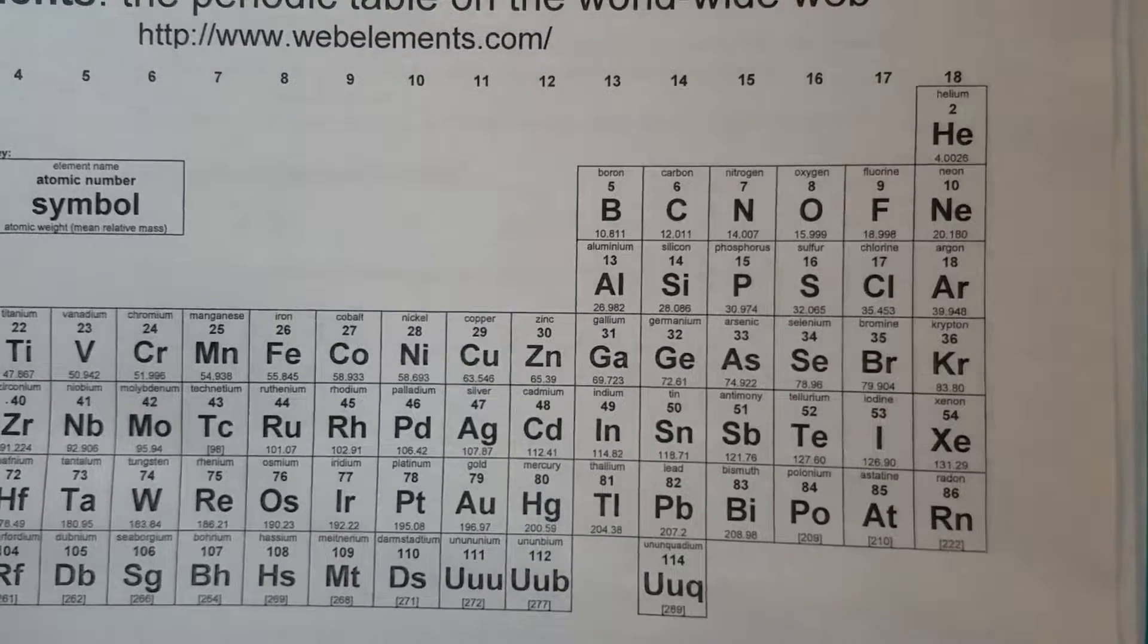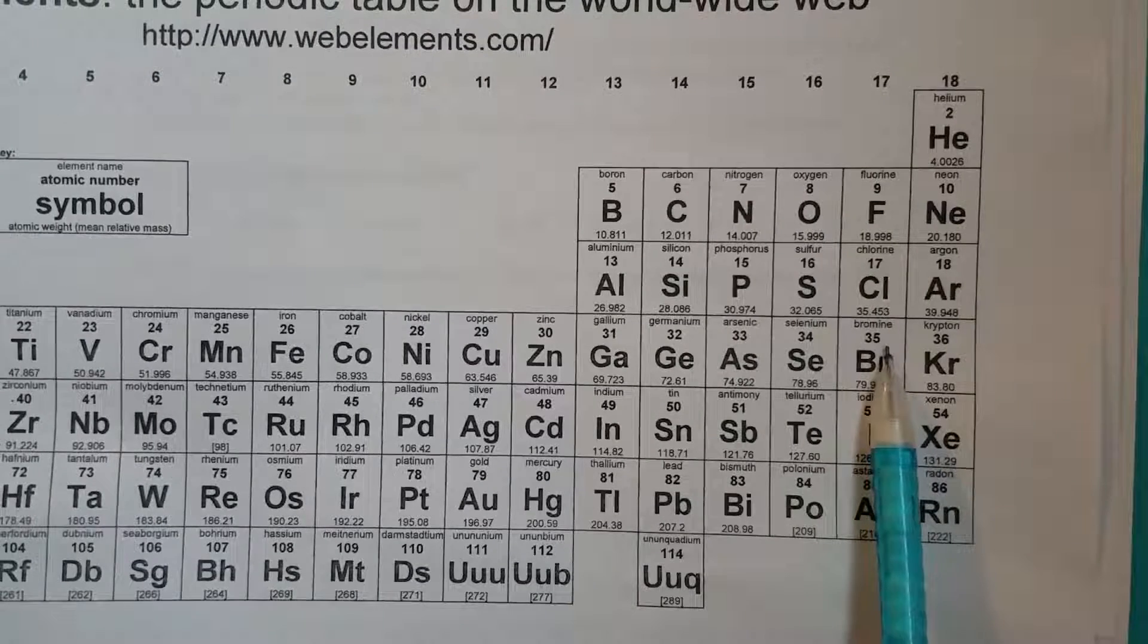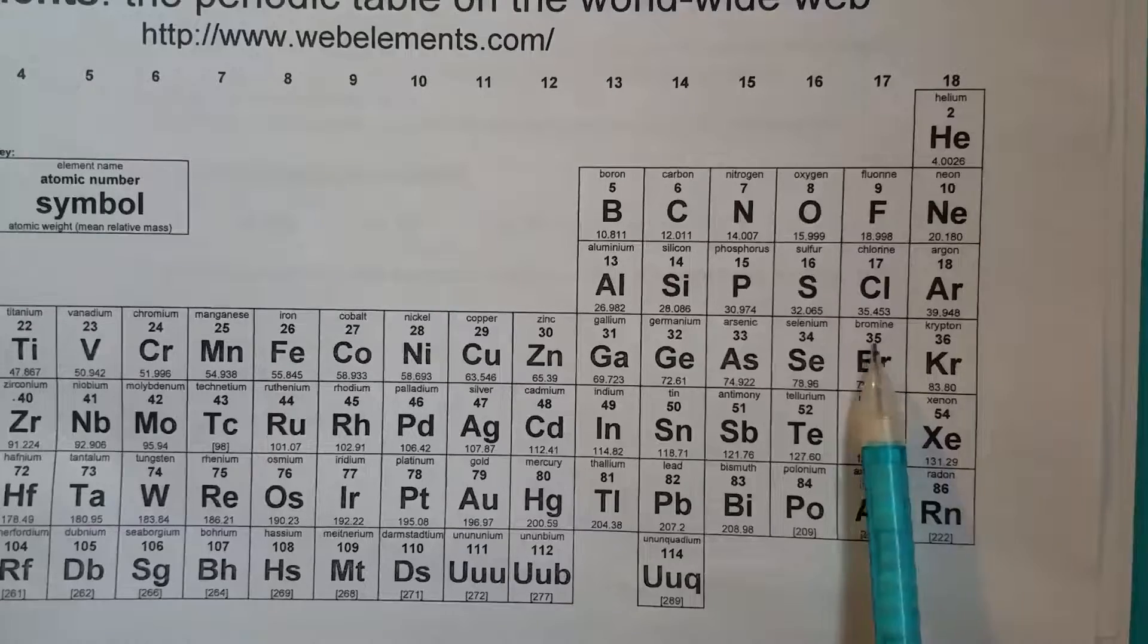First, let's find out the atomic number of bromine, 35, which means it also has 35 electrons.